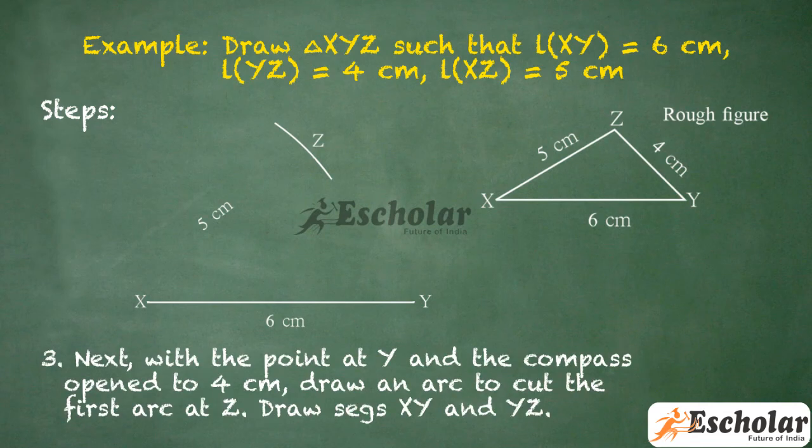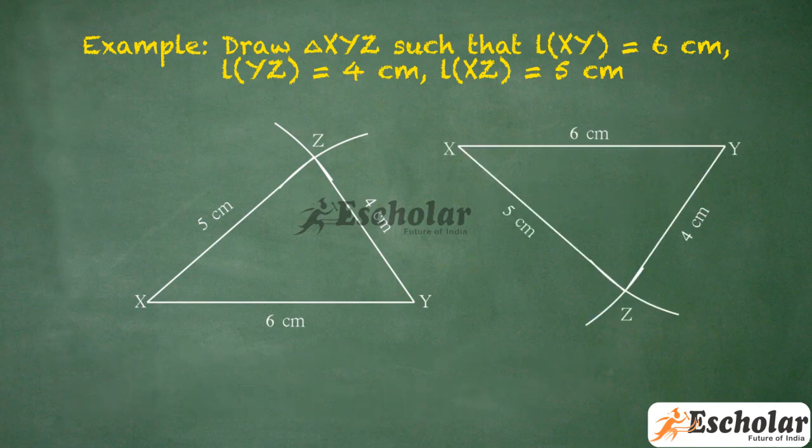Third, next with the point at Y and the compass open to 4 cm, draw an arc to cut the first arc at Z. Draw segments XZ and YZ. A similar construction can be drawn on the other side of the base as shown below.